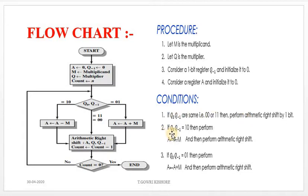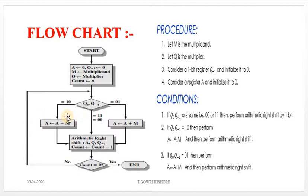Second condition: if Q naught and Q minus 1 equal 1 0, then we perform the operation A → A minus M, followed by an automatic right shift.